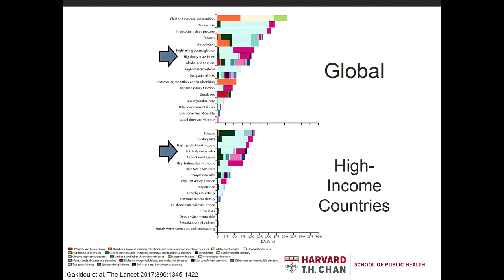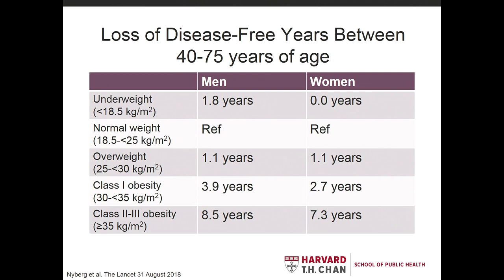I wanted to highlight some recent estimates from The Lancet on the consequences of this global obesity epidemic. The arrow shows the DALYs — disability-adjusted life years — attributable to a high BMI. Both in global estimates and in high-income country estimates, high BMI is definitely among the top risk factors contributing to disability-adjusted life years, and that number is ever-increasing.